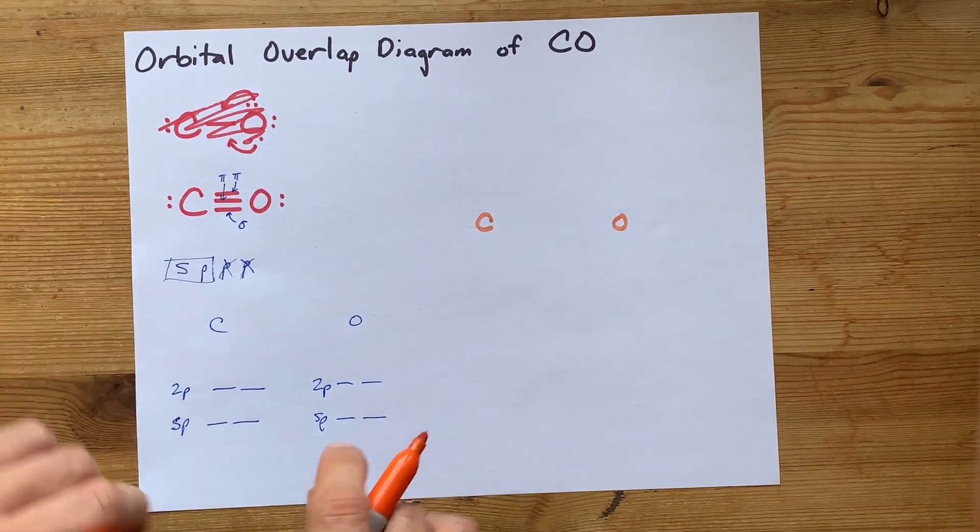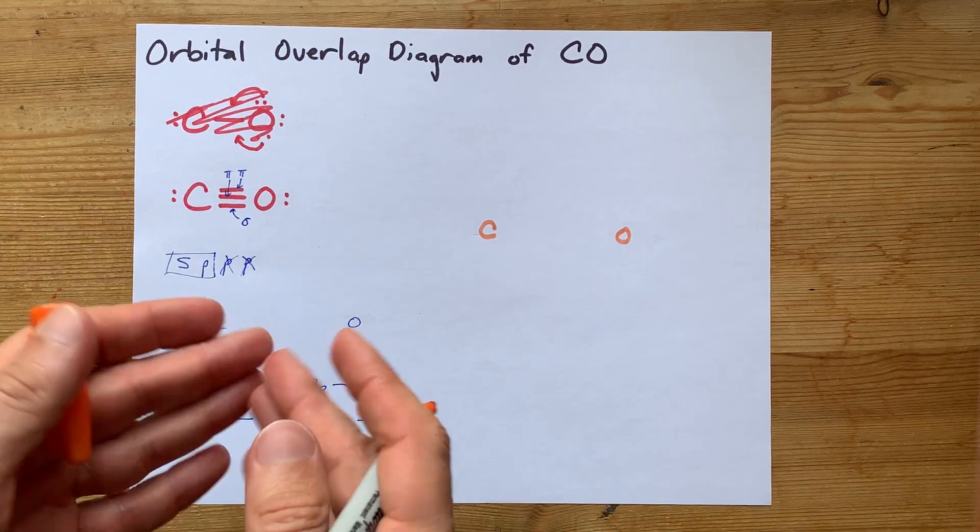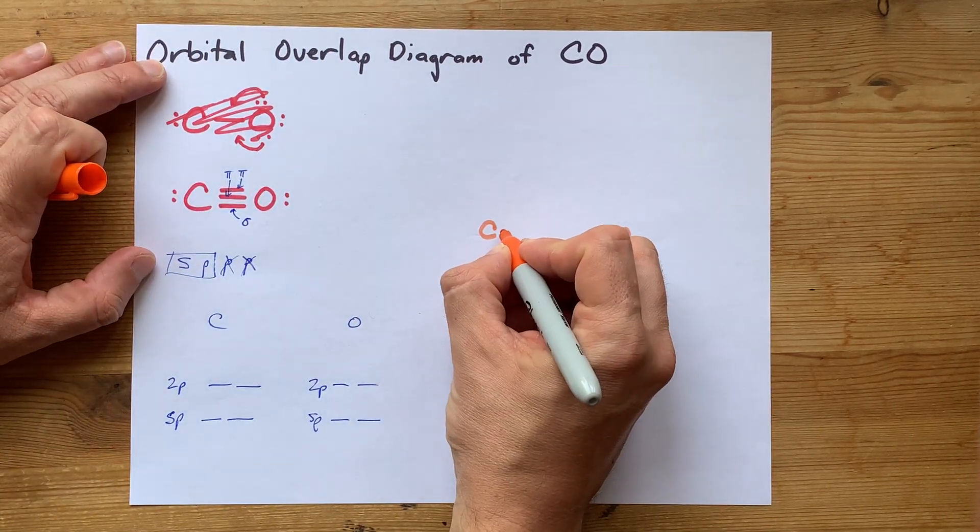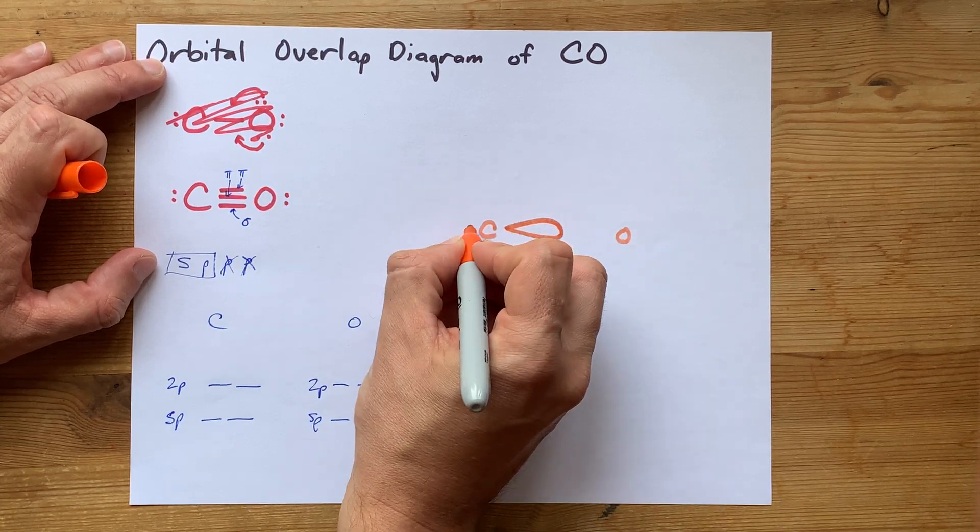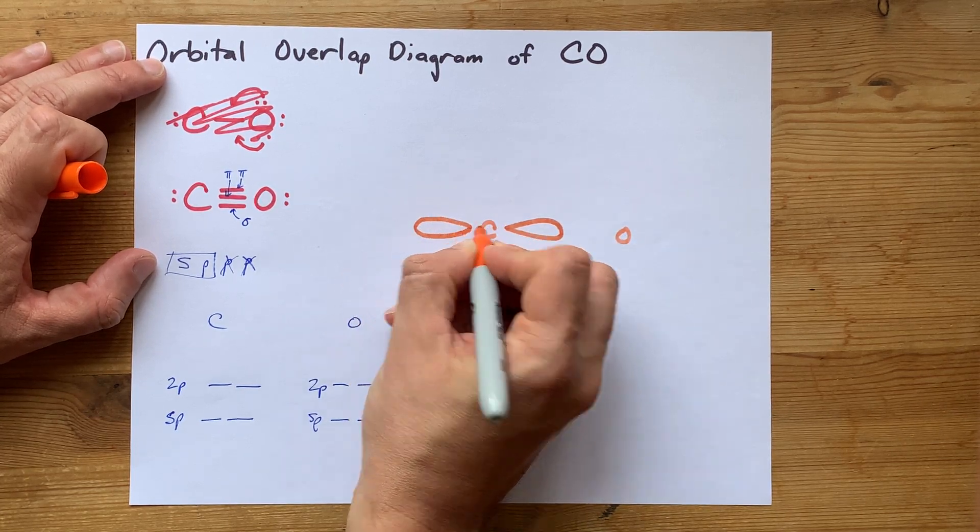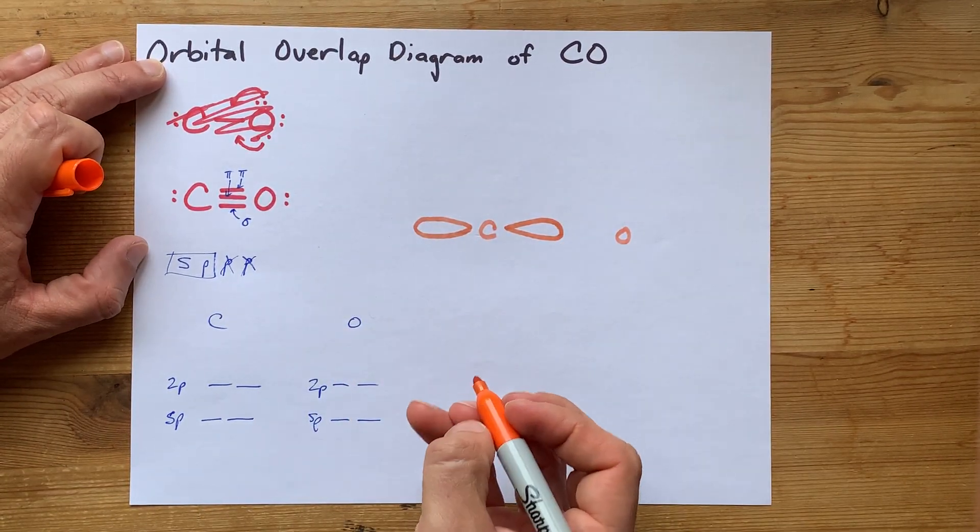Oxygen. Each of them has two SP hybridized orbitals. What do SP hybridized orbitals look like? Well, they come out in a linear arrangement from the atoms. One, two hybridized orbitals. That's the shape of them. That's what they look like.